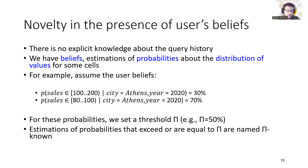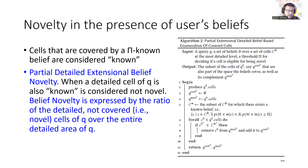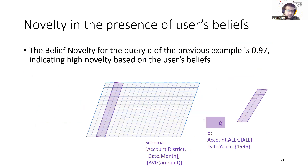There is also the chance to evaluate novelty in the presence of user beliefs, where there is no explicit knowledge about query history and we simply have beliefs — estimations of probabilities about the distribution of values for some cells. For example, a user belief is that for the city Athens in the year 2020, the sales of a product were between 80 and 1000, with a probability of 70%. We set a threshold, for example 50%, and estimations of probabilities that meet or exceed that threshold are named p-known. Cells covered by a p-known belief are considered known. The partially detailed extensional belief algorithm returns the ratio of the detailed, not-covered, and therefore novel, cells of Q over its entire detailed area. For the previous example, the belief novelty is 0.97, indicating high novelty based on user beliefs.